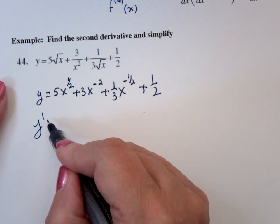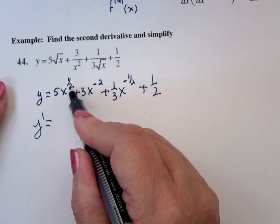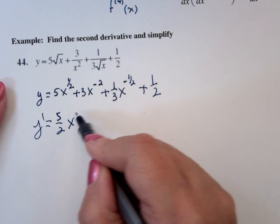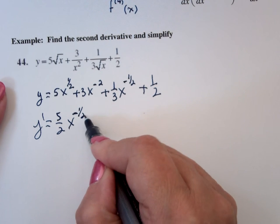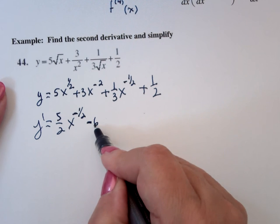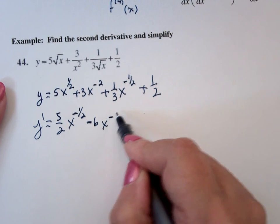So y prime would be 1/2 times 5, which is 5/2, x drop the power, to the -1/2. 3 times -2 is -6x to the -3,